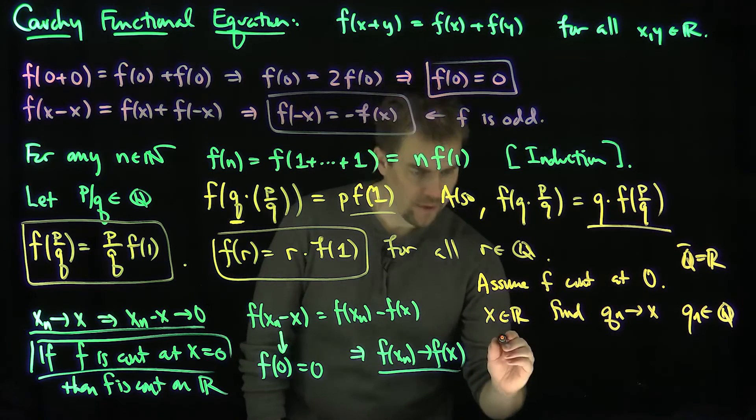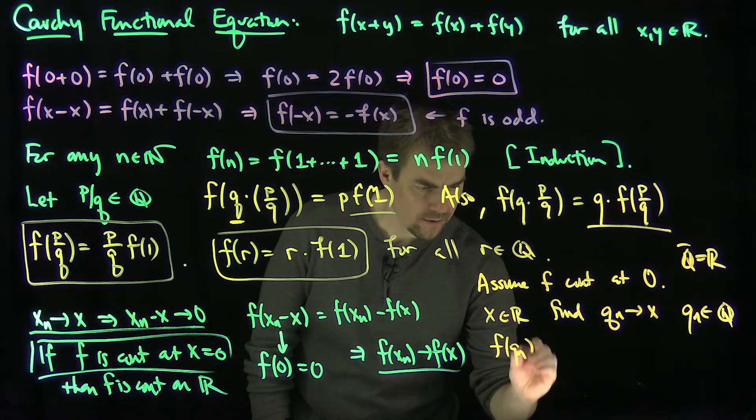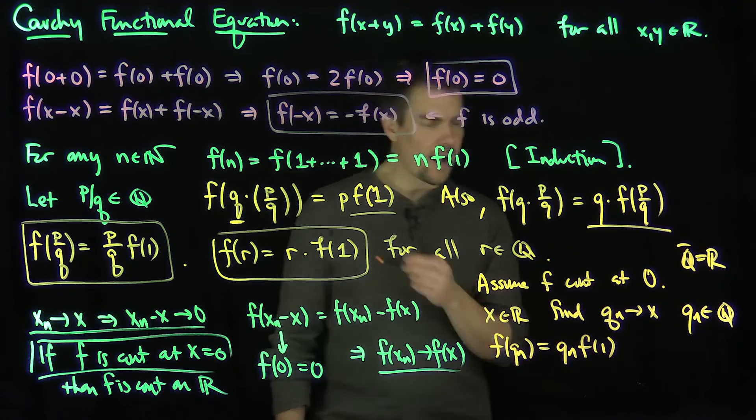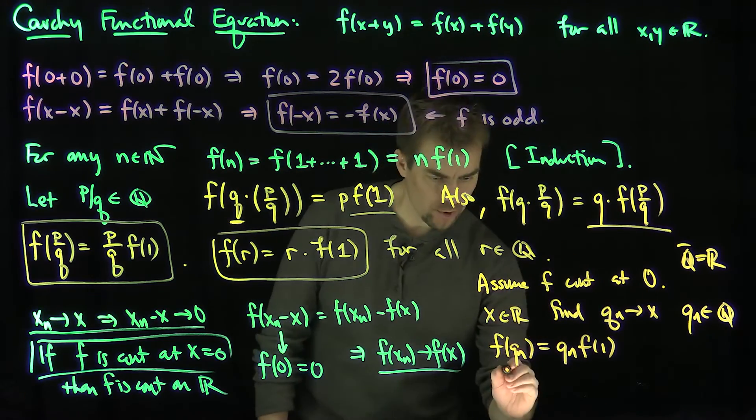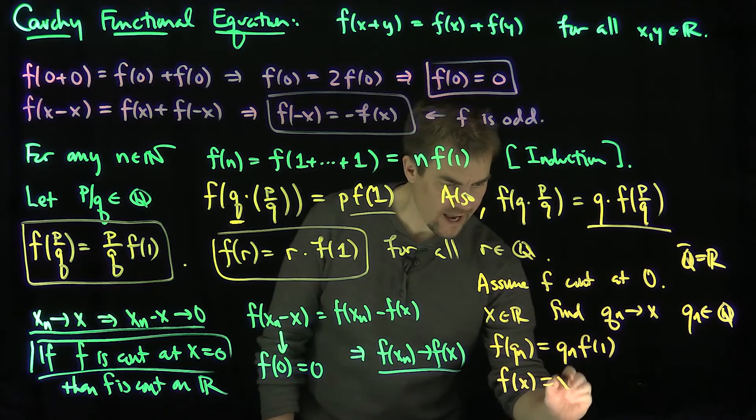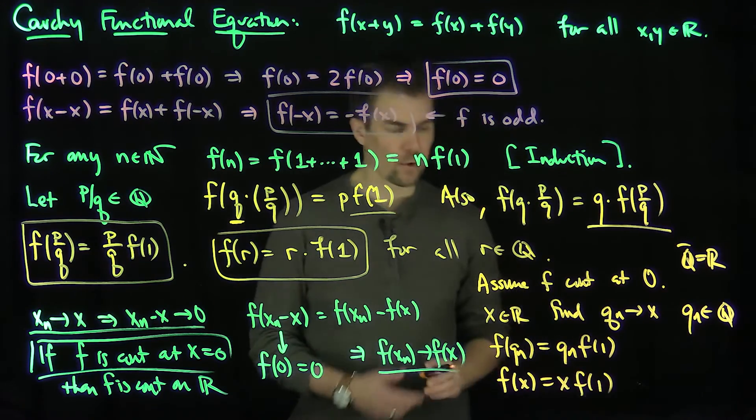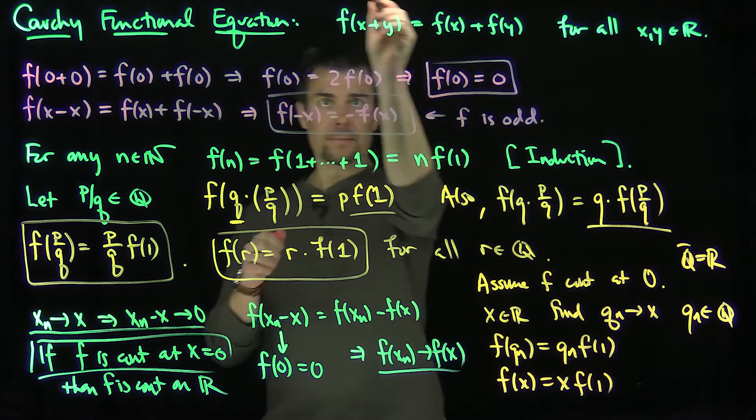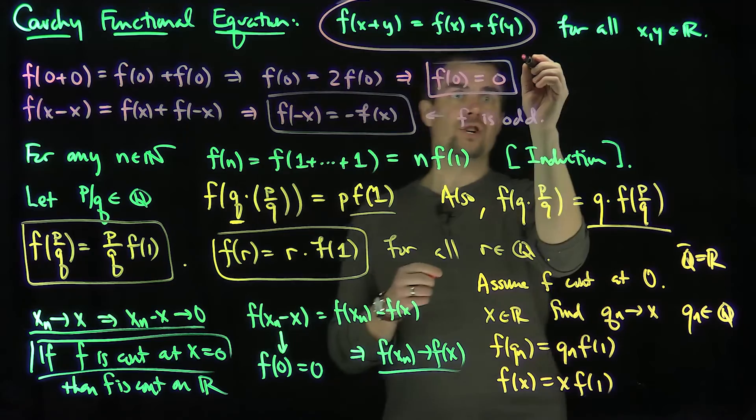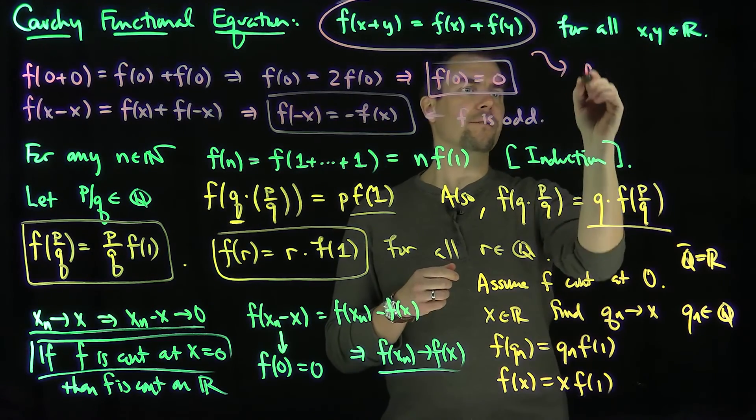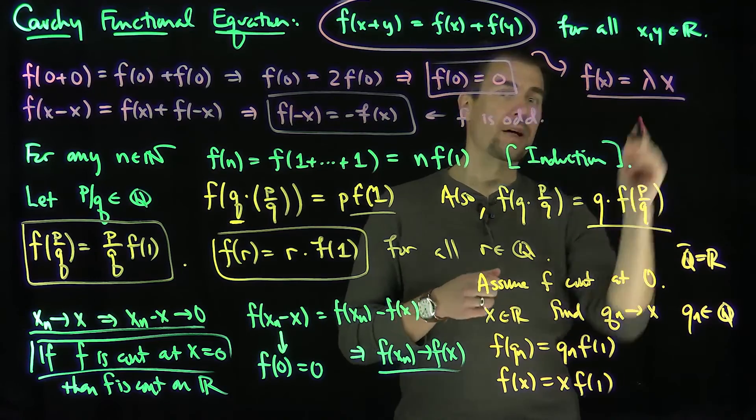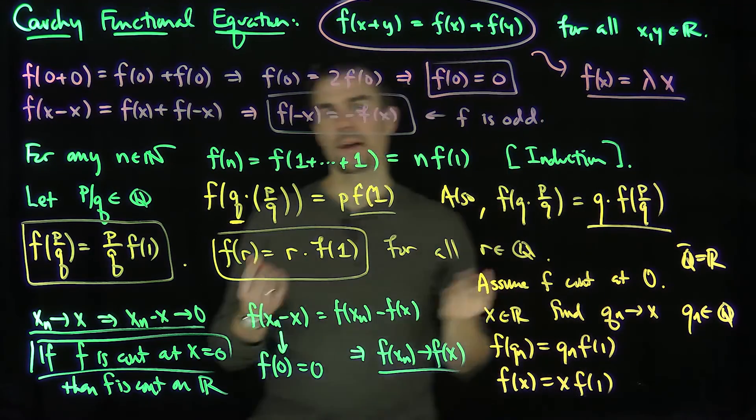And then what will this tell me? I know that f(q_n) = q_n·f(1), and so as n goes to infinity, this is going to go to f(x) = x·f(1). So in other words, the only continuous functions that satisfy this equation over here, this Cauchy functional relationship for continuous functions, are just the functions f(x) = λx, where that number λ is f(1). Thank you very much.